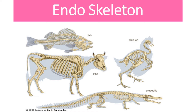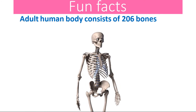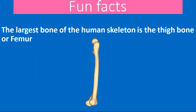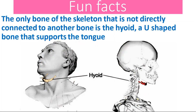Before we delve into the human skeleton, here are a few fun facts. The adult body consists of 206 bones, the largest being the thigh bone or the femur. The smallest bones are found in your ear — those three bones are the hammer, the anvil and the stirrup. The only bone not directly connected to another bone is the hyoid, a U-shaped bone that supports the tongue.